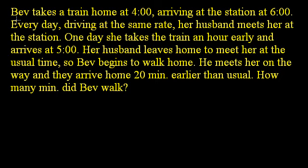So in this problem, we have Bev. She takes a train home at 4 o'clock, arrives at the station at 6 o'clock. Every day, driving at the same rate, her husband meets her at the station. One day she takes the train an hour early and arrives at 5. Her husband leaves home to meet her at the same usual time.